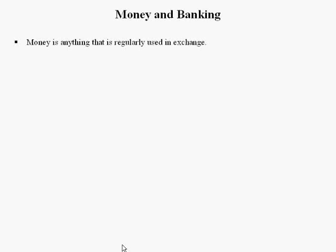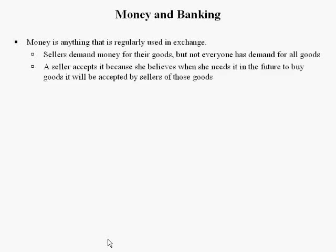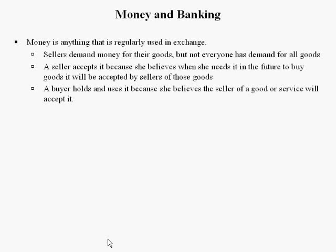Money is anything that is regularly used in exchange. Sellers demand money for their goods, but not everyone has demand for all goods — that's why barter systems don't work very well. A seller accepts money because she believes it will be accepted by sellers of goods and services when she needs it in the future. A buyer holds and uses it because she believes a seller will accept it.